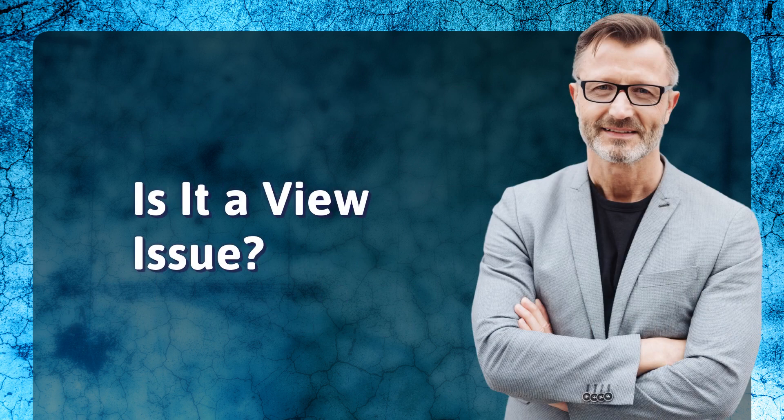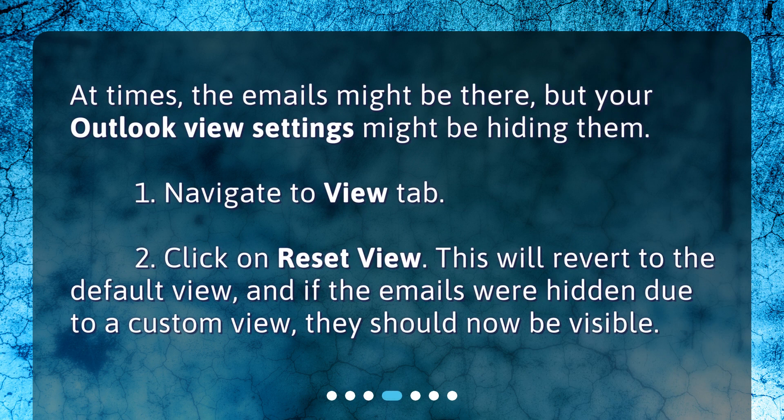Is it a view issue? At times, the emails might be there, but your Outlook view settings might be hiding them. Navigate to the View tab and click on Reset View. This will revert to the default view, and if the emails were hidden due to a custom view, they should now be visible.